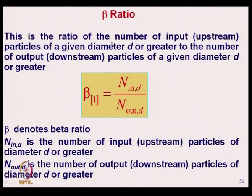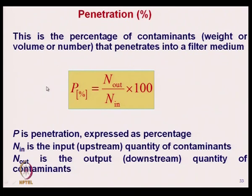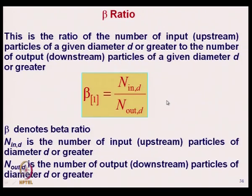Beta ratio is the ratio of the number of upstream particles of a given diameter d or greater to the number of downstream particles of the same diameter. In penetration efficiency it was N_out / N_in and could be in terms of weight, volume, or number, but in beta ratio it specifically uses the number of particles of a specified diameter.